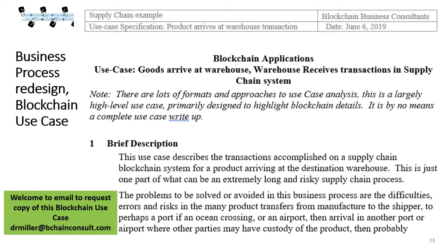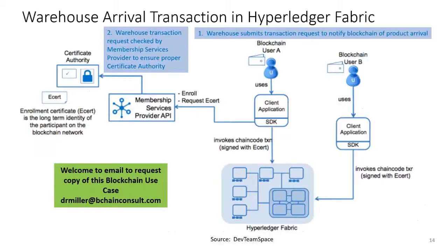Another use case we developed for a Starweaver client — also a supply chain application — involves a truck delivering goods to a warehouse and storing that transaction on the blockchain, providing security against fraud such as the wrong trucking company arriving or counterfeit or stolen goods. We go through the details of the Hyperledger Fabric process in this use case, and I'll run through it now fairly quickly to give you an overview of how a private permissioned blockchain works.